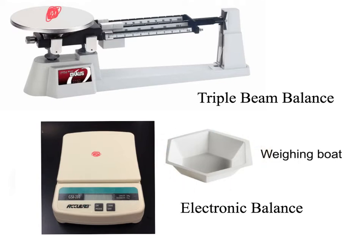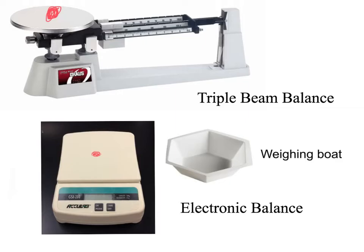The function of the weighing boat is to weigh something without damaging the balance. The important side note: you always want to take into consideration that the weighing boat itself has some mass. So it would be foolish to put it on the balance, put your item in it, and record the number without subtracting the weight of the boat — you have to subtract that to determine the actual mass of the item.